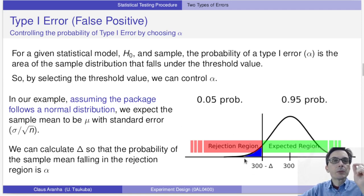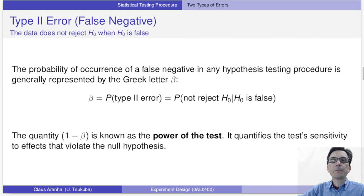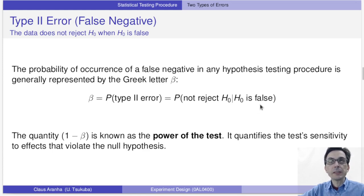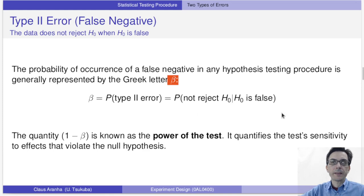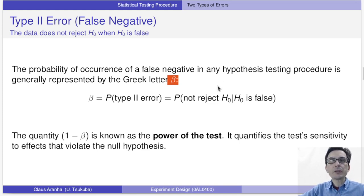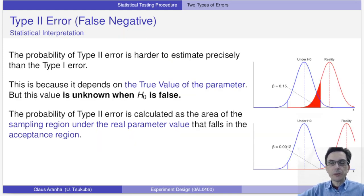This is equivalent to the blue area shown in the image. Now let's think about Type 2 error. A Type 2 error — a false negative — happens when the null hypothesis is not true but our estimate falls inside the acceptable area. It is represented by the letter beta. One minus beta is the power of the test.